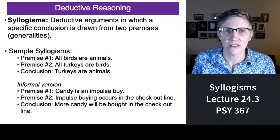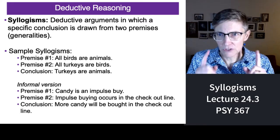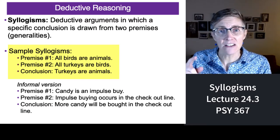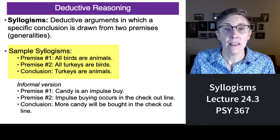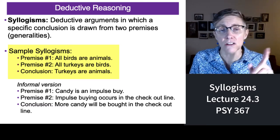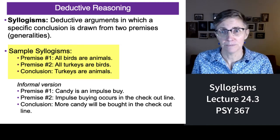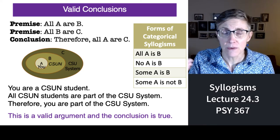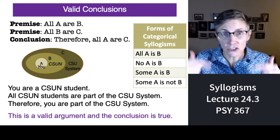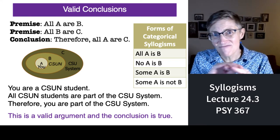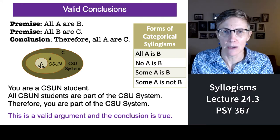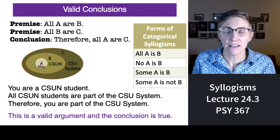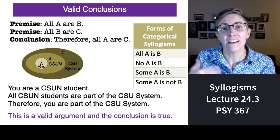Here's a syllogism. If we make the statement that all birds are animals — that's true — and all turkeys are birds — that's true — then the conclusion follows that all turkeys are animals. True. Now, you can have premises that are true or false, but you can have conclusions that are not valid. You can agree about facts and statements and observations, and you can reason about them logically or illogically. In other words, you can draw valid conclusions or invalid conclusions.